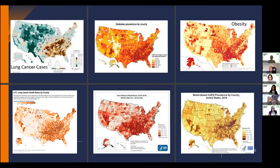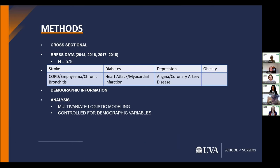Looking at maps, you can see the overlap of lung cancer cases, mortality, and the most common comorbidities. The areas of the country most affected by lung cancer are also where comorbidities are more concentrated — concentrated in the southeastern states. We conducted a cross-sectional study using the BRFSS data. Comorbidities used in the study were limited to those collected as part of the BRFSS survey. We categorized people into three groups: no comorbidities, one to two comorbidities, and three or more comorbidities. We collected demographic information and used multivariate logistic modeling for analysis.